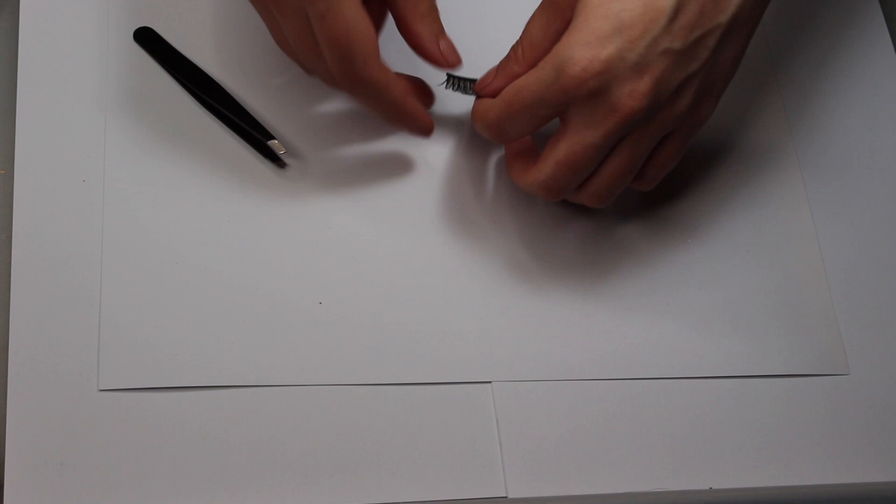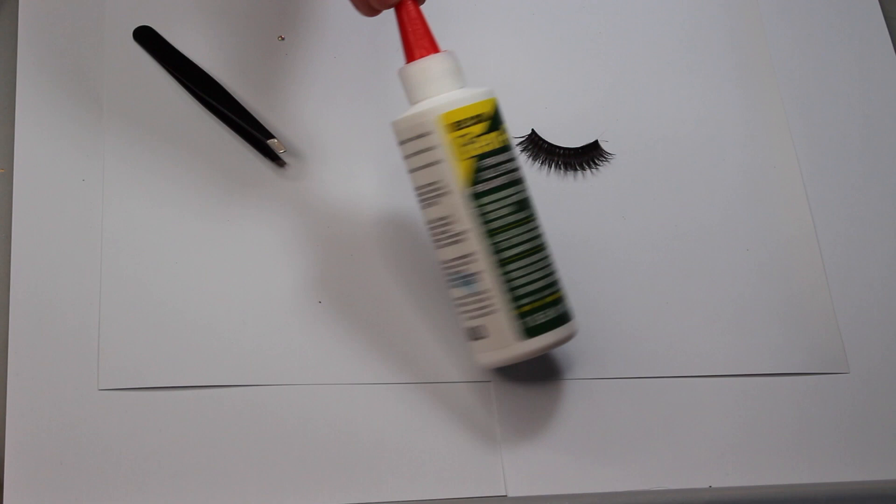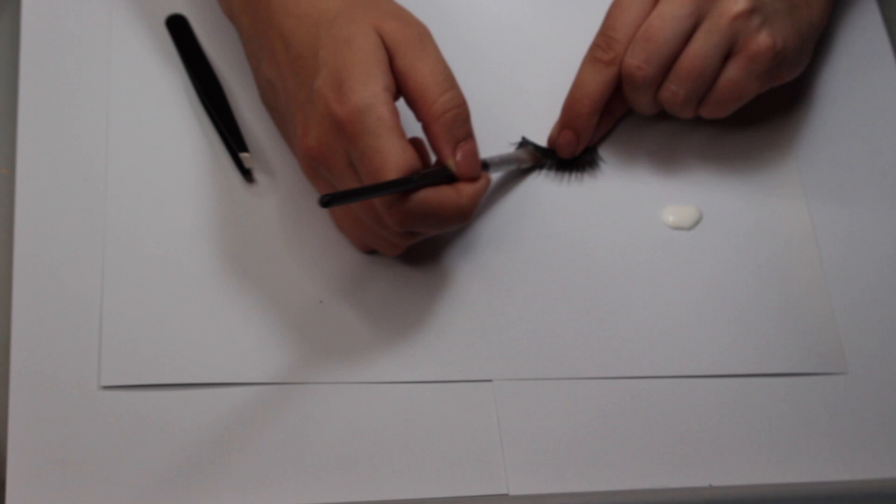I took the set of lashes and some gem tech. I think you can probably do this with PVA glue as well. Gem tech is especially for gluing on gems and stuff. I've got a blob of that. I first painted the outer side of the lashes.